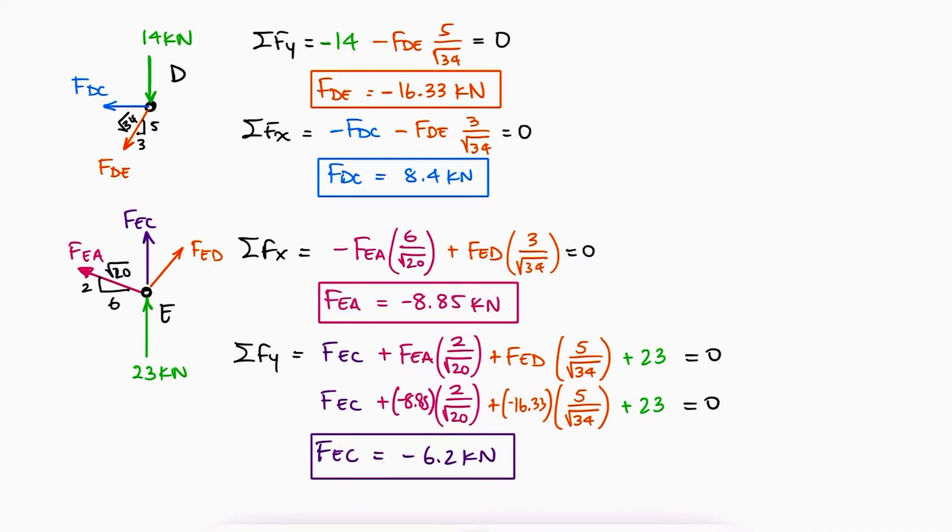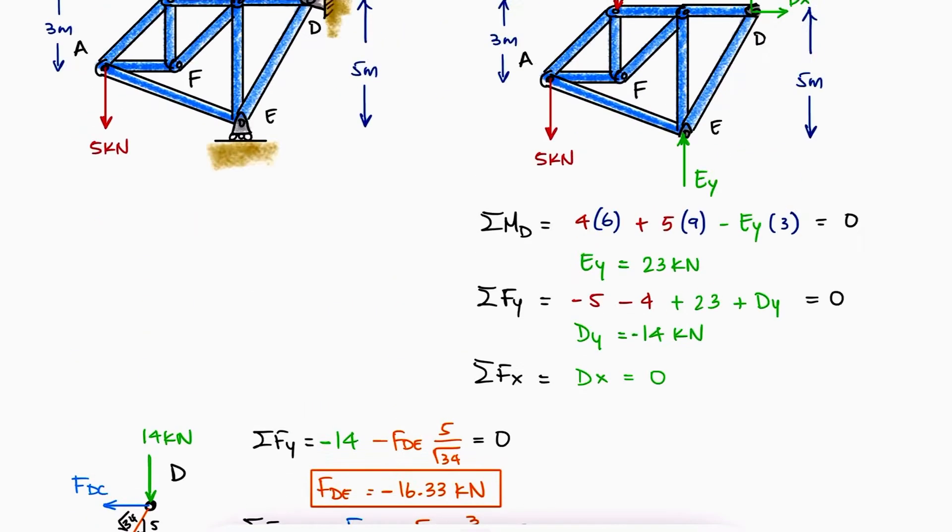Remember that the values I'm using to find the components in the X and the Y axis of the vectors come from the given values for the distances of the truss and the hypotenuse from the Pythagorean theorem. For a refresher on that, I'll leave a link in the description below.